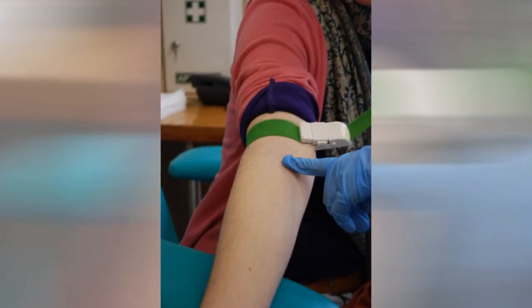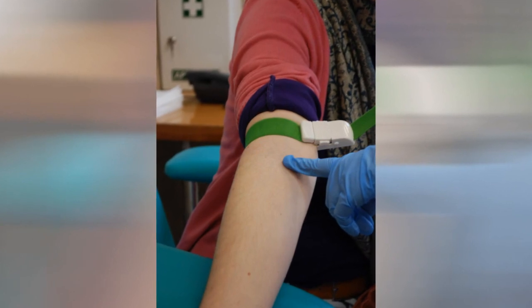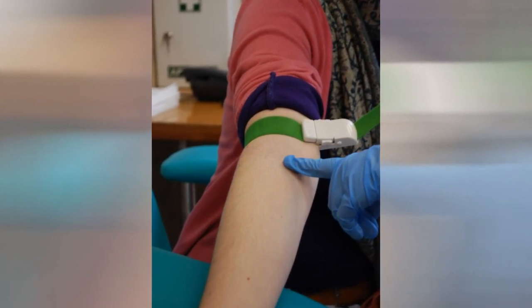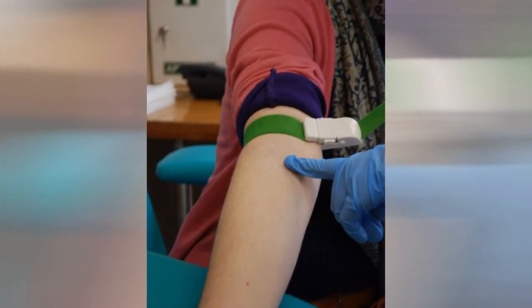A nurse or doctor will insert a needle attached to a syringe into a vein in the arm and then draw out a sample of blood. This procedure is known as a venipuncture.